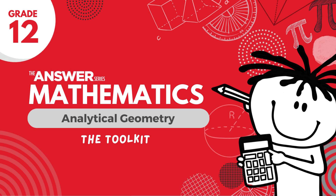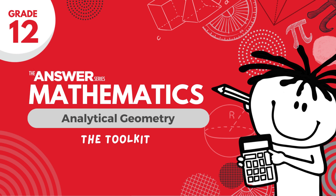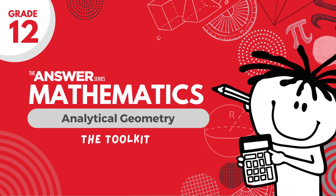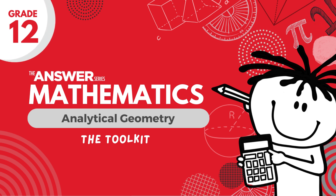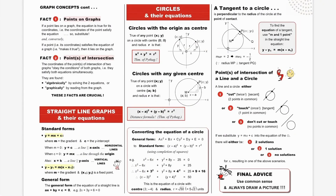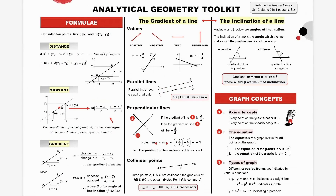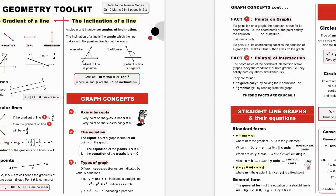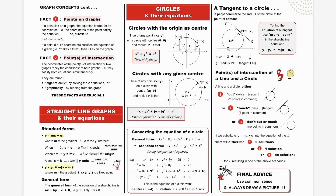This summary, which you will find in the Answer Series Grade 12 Maths 2-in-1 Study Guide, contains all the tools you need to succeed in answering exam questions on this topic. Although these two pages look fairly dense — this is the first page and that is the second — it is great that we can summarize all that we have learned in a two-page toolkit. There are four drawers of tools: formulae, graph concepts, straight line graphs, and circles. These drawers contain all the tools that you will need.